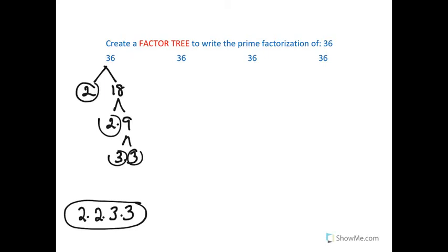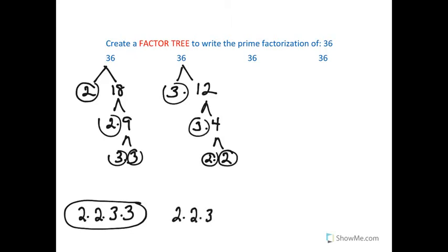And 36, we could say that's equal to 3 times 12. 3 is prime. 12 is equal to 3 times 4, or 2 times 6. Either way. Circle your primes. Do we get the same thing? 2 times 2 times 3 times 3? Yes, we do.